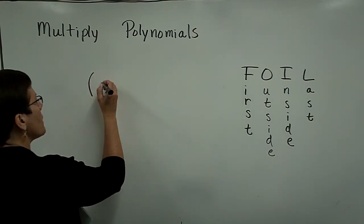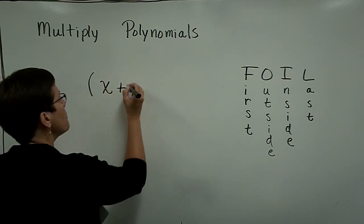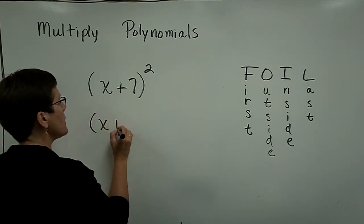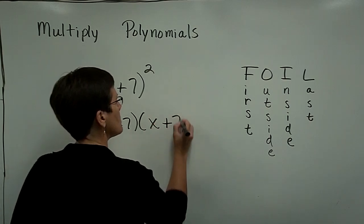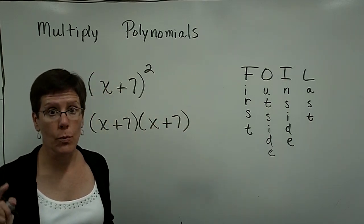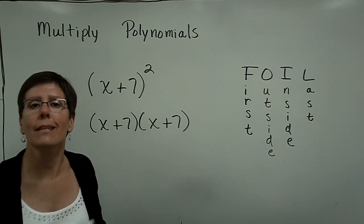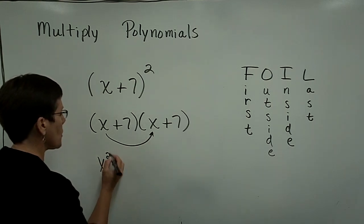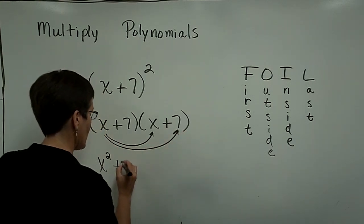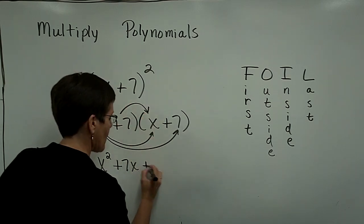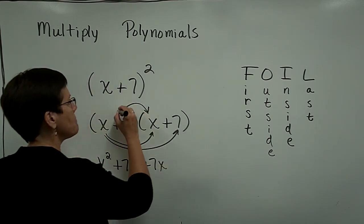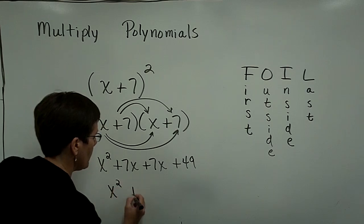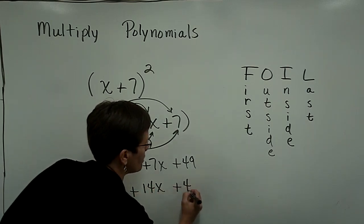If I ask you to take a binomial and square it, all I want you to be aware of is that I'm asking you to take that binomial and multiply it times itself. I feel it's very important that you write down the binomials twice and do the foiling process. Because oftentimes, let's get that first term, people don't get this 7x and that 7x, which add to be 14x. Here we have a 49. The solution to this problem is x squared plus 14x plus 49.